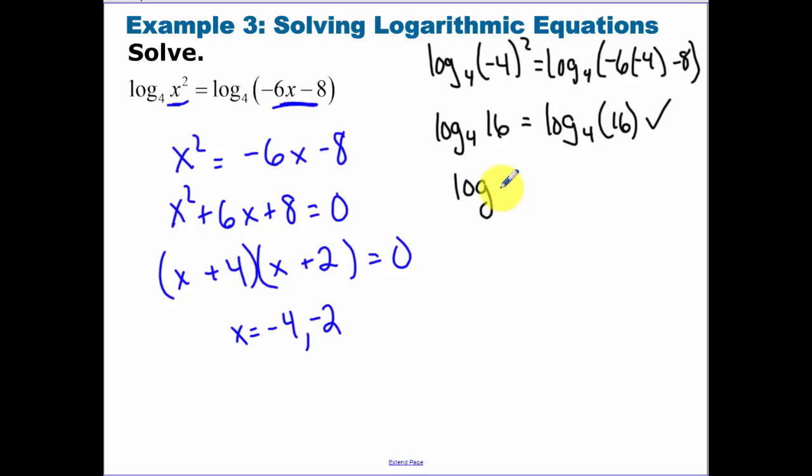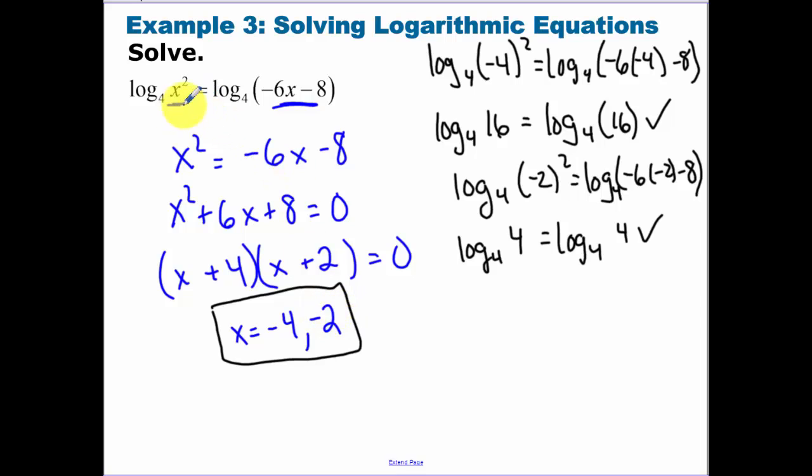Real quick, let's check negative 2. So negative 2 squared is 4. I have a 12 minus an 8, that is also equal to 4. So both our answers work. So your answers can be negative, but if you make those insides negative, that's when you wouldn't have a solution.